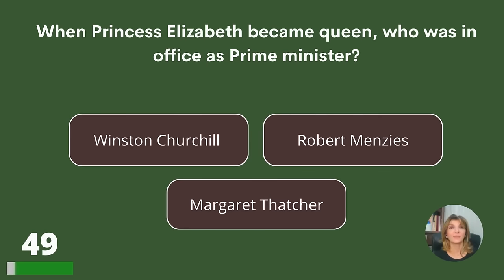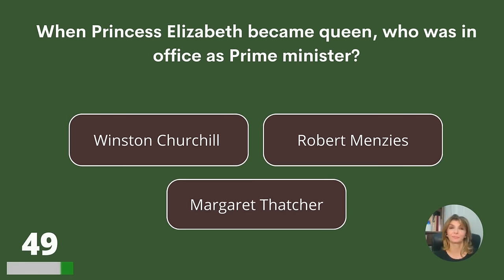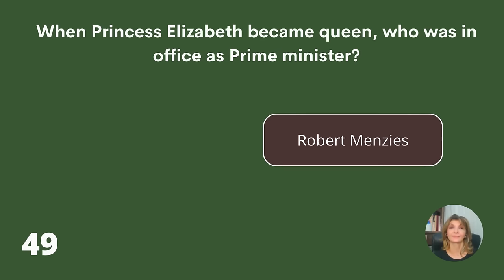When Princess Elizabeth became Queen, who was in office as Prime Minister? Winston Churchill, Robert Menzies, or Margaret Thatcher? Answer: Robert Menzies.